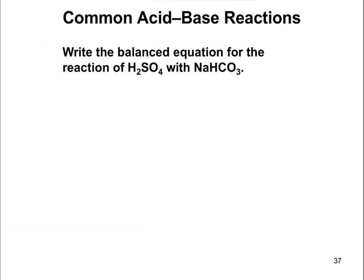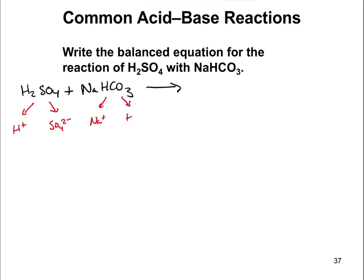Let's do a practice: write the balanced equation for sulfuric acid with sodium bicarbonate. So H2SO4 plus sodium bicarbonate. H2SO4 gives H+ — each of those H's is a proton that can be donated — and SO4 2− is the polyatomic anion. For sodium bicarbonate, we have sodium and HCO3−. Next, we trade partners: H+ goes with HCO3−. Since the charges are the same, they come together in a one-to-one ratio, making H2CO3.